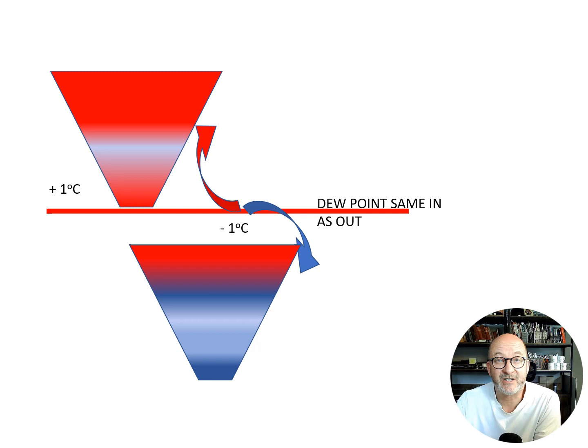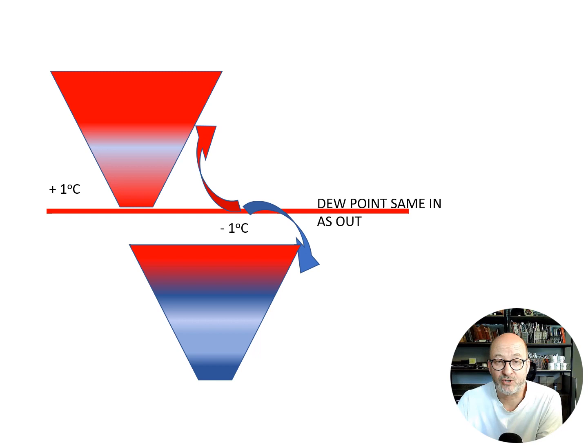One degree above the dew point and the evaporation rate is higher; one degree below and the condensation rate is higher. This is very important when you consider issues such as condensation, ventilation, and movement of moisture through spray foams in roofs. If vapor meets the dew point as it travels through a material, it will turn to water — and that is precisely what we don't want. You can see in this diagram that as the temperature moves away from the dew point, the evaporation or condensation will increase.